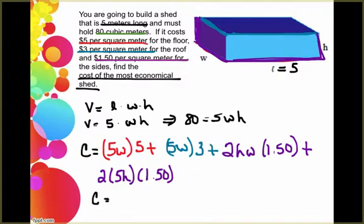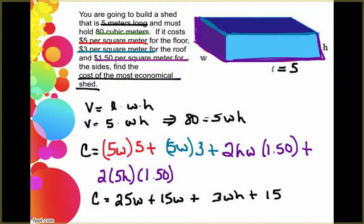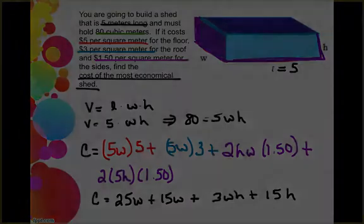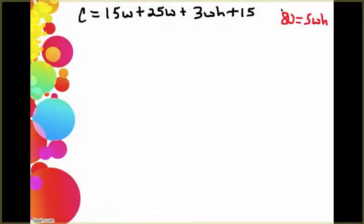So right now we have that our cost is 25w plus 15w plus 3wh plus 15h. So at this point these are the two equations that we're working with. We have our cost equation and then we have our equation that they gave us for volume. And now what we need to do is take this equation 80 equals 5wh and solve for one of the variables. And then we're going to replace that into the cost equation.